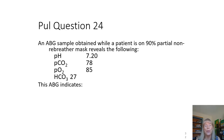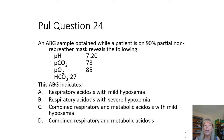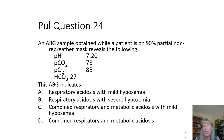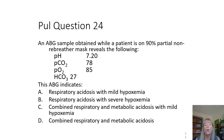Another question: an ABG obtained while a patient is on a 90% partial non-rebreather reveals the following. Anyone on a non-rebreather is among the sickest patients in the hospital — they're likely going to need intubating or need to get better, so you've got to watch them. O2 is 85 but they're on 90%, so that's probably severe hypoxemia. Dividing 85 by 0.9 gives a very low PF ratio. CO2 is 78 — high — which is acid. Bicarb is 27, which is normal. The acid lines up with the pH, which is acidotic. So we have a respiratory acidosis with severe hypoxemia.